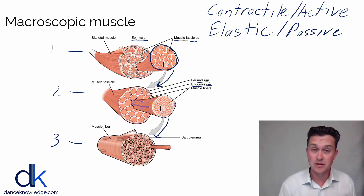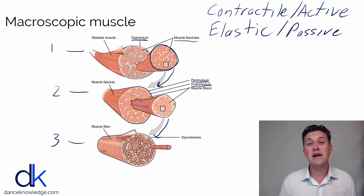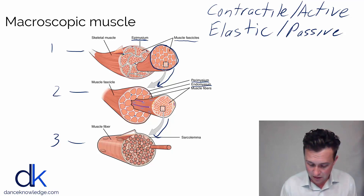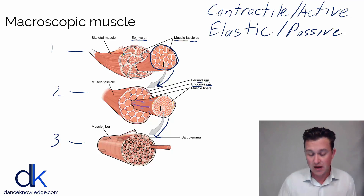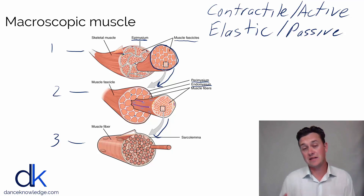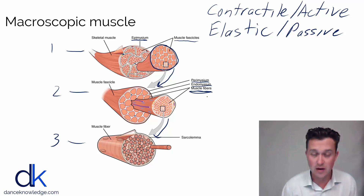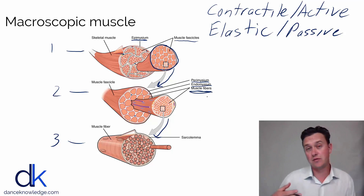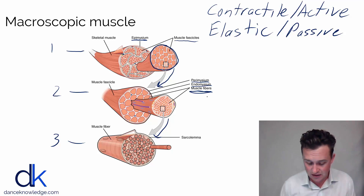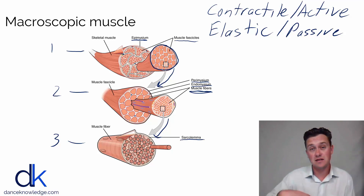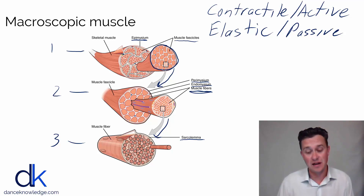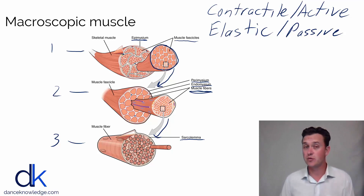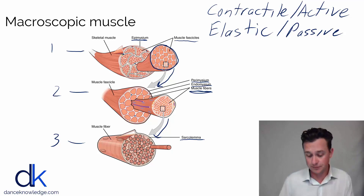Going down to picture two, you can see the muscle fascicles look really not unlike the whole muscle, in that we've got perimysium and endomysium — elastic or passive materials — wrapping up the muscle fibers. Muscle fiber is what you see in image three, and within the muscle fiber we have more little bundles. This is where we get down to the microscopic level. Within the muscle fiber we have all of these active components called sarcomeres, which we're going to look at in detail in the next lecture on the microscopic structure of muscle.